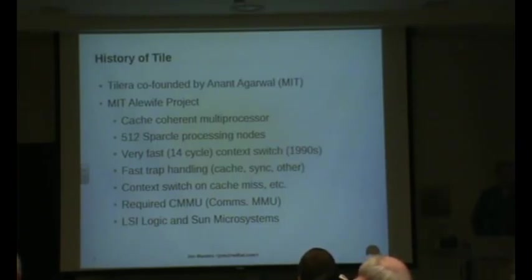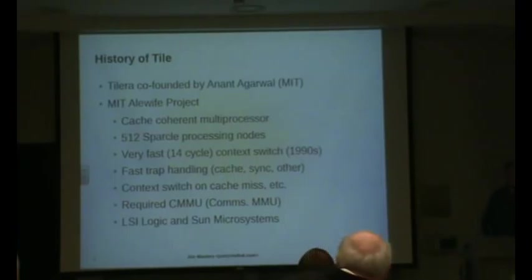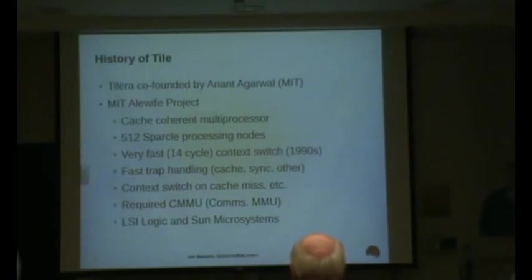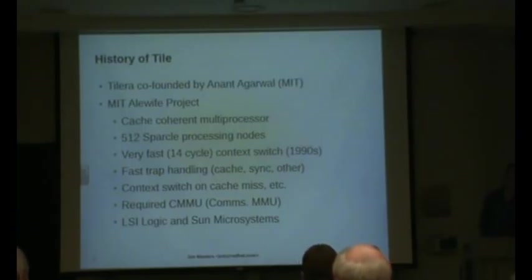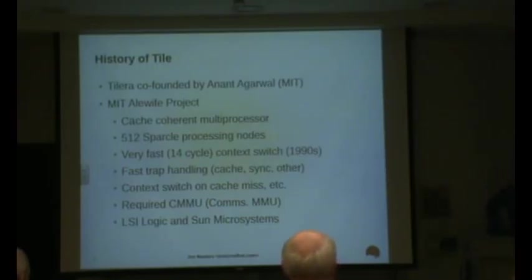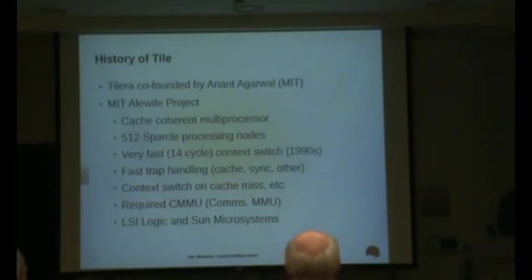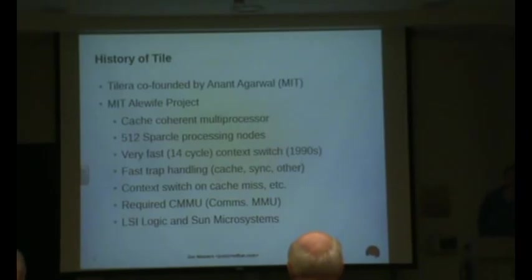What they did was say: we want to play around with highly scalable multi-processor systems. And the way we're going to do this most effectively is not to completely redesign a microprocessor from scratch, because that takes time and money, neither of which are necessarily abundant in academia. So they went to Sun and LSI. The SPARC architecture is kind of an open standard in that other people can implement it. So they said to Sun: we need to add a few features to SPARC for academic purposes. They created something called SparkLE — basically a SPARC processor modified to do very fast context switching.